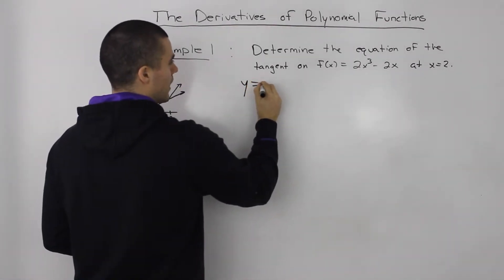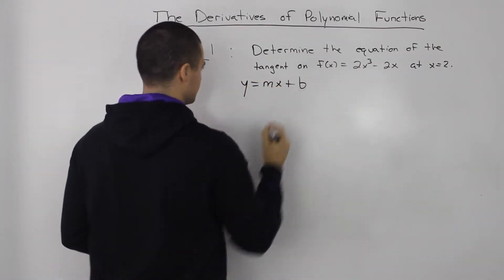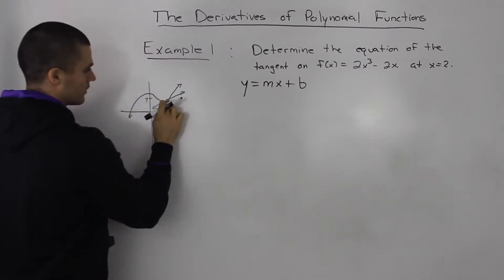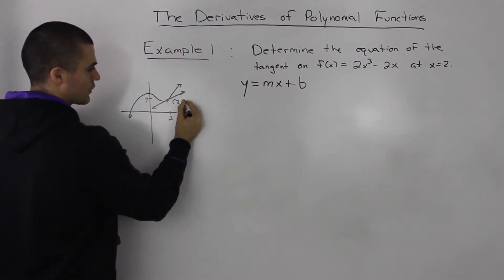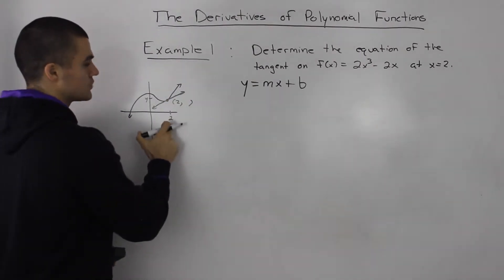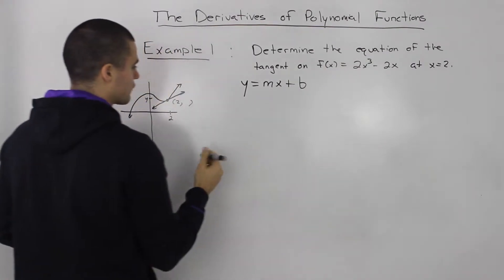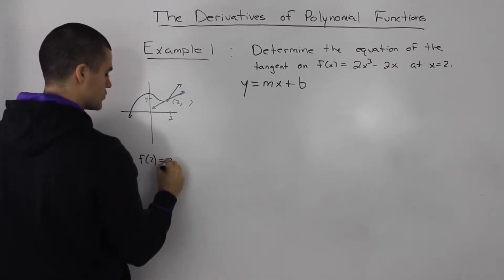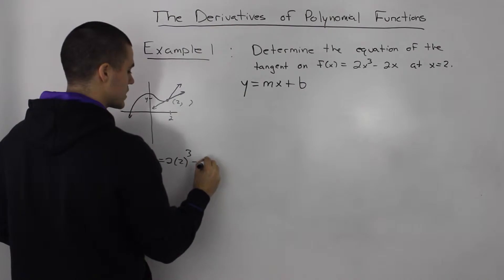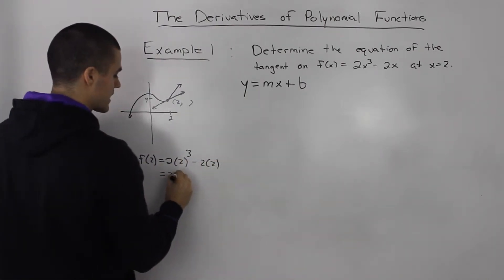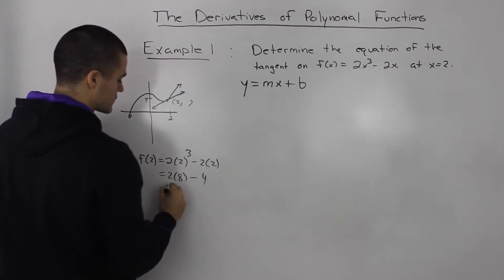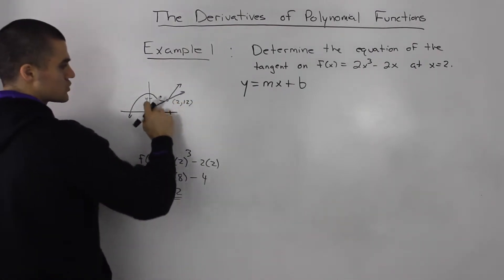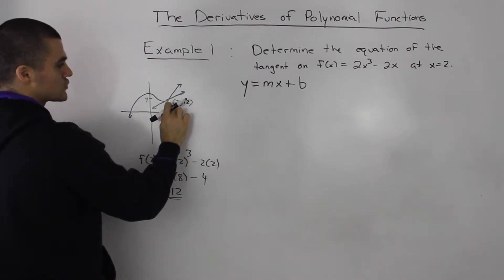We're going to have to find y equals mx plus b. The first thing we want to figure out is the y-coordinate of the point at x equals 2. We plug 2 into the function: f of 2 equals 2 times 2 cubed minus 2 times 2. 2 cubed is 8, so we get 16 minus 4, which equals 12. So the point is (2, 12).